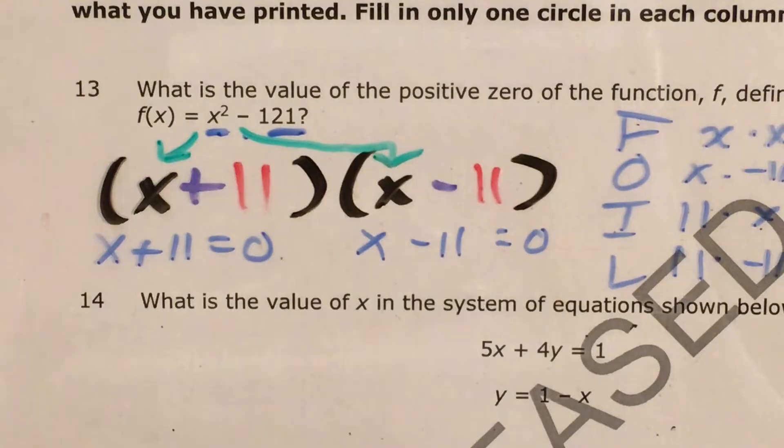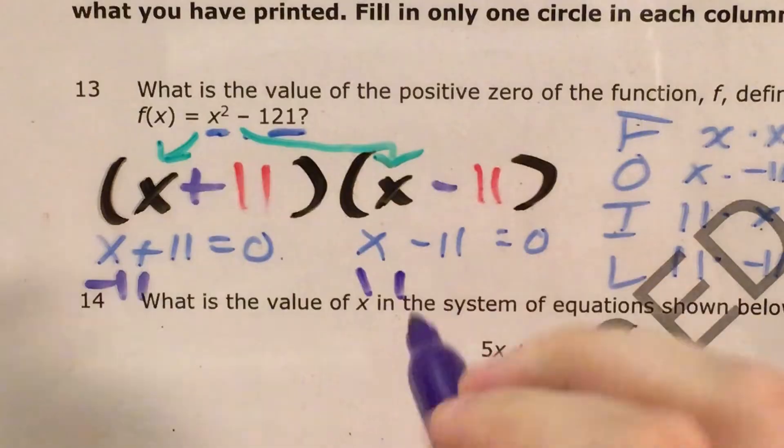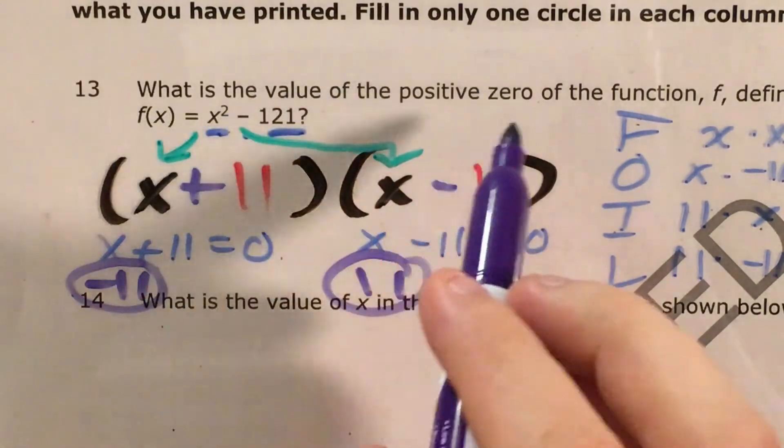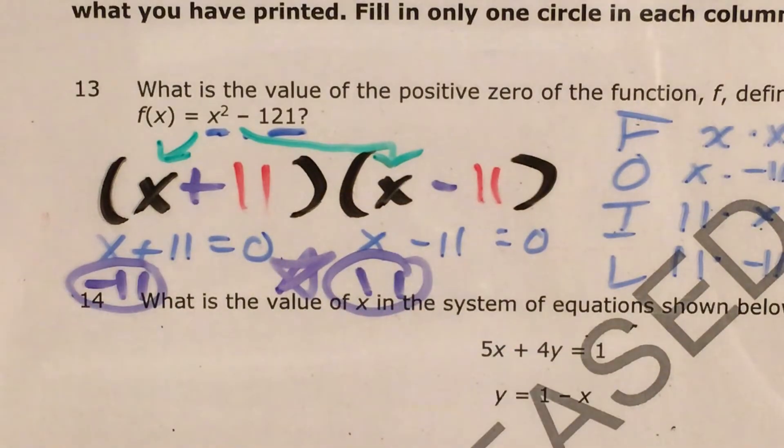So what number plus 11 equals zero? Negative 11. What number minus 11 equals zero? Positive 11. So we have a zero, we have a zero. The question was asking for the positive zero, so that's going to be 11. Positive 11.